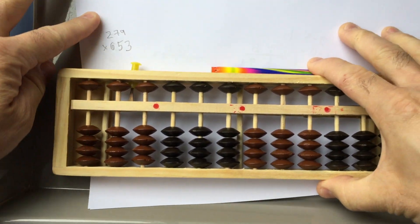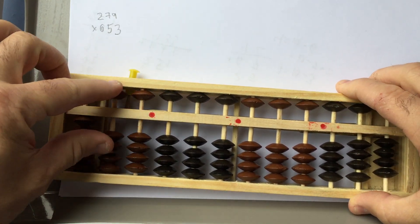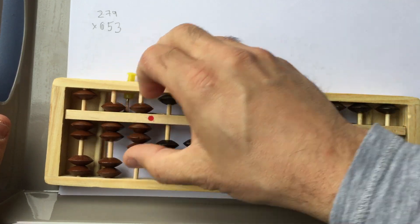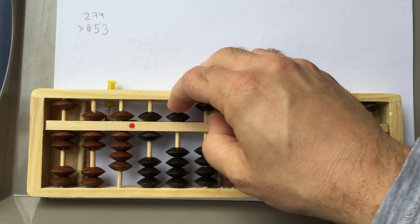Okay, so we have, I'll just zoom in here, 279 times 653. Okay, so we're gonna set the Soroban to 279. Okay, that's 279.